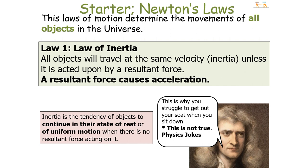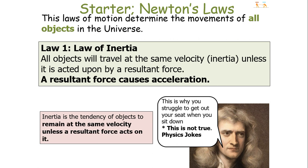The first law is what we call in physics the law of inertia, which states that all objects will travel at the same velocity unless acted upon by a resultant force — so a resultant force causes acceleration. We call this the law of inertia because the tendency for an object to continue at the same velocity, whether at rest or in uniform motion when there is no resultant force, is termed inertia.